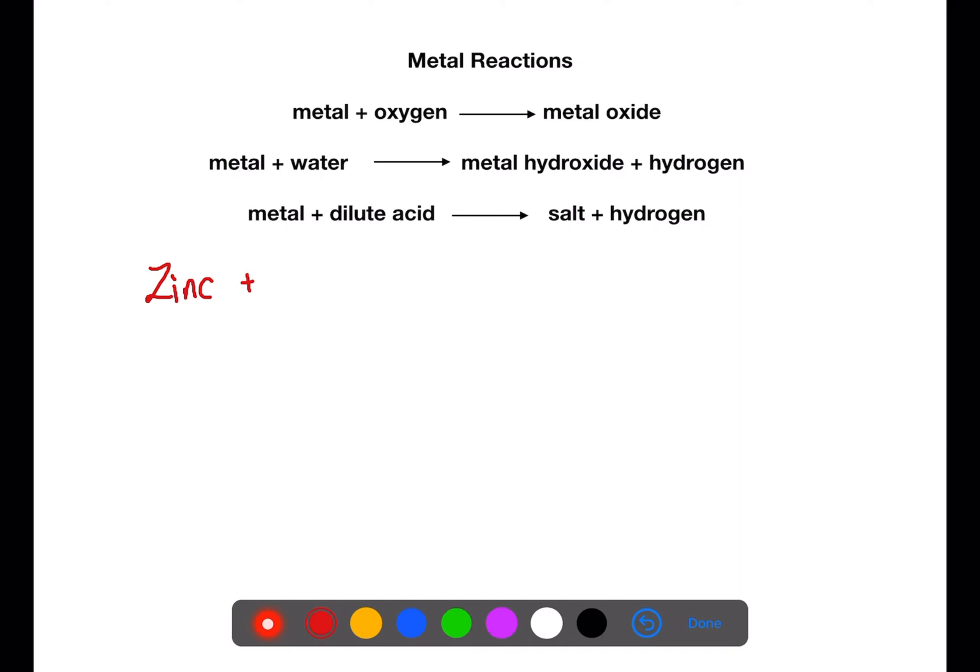Let's first look at writing word equations for these reactions. When metals react with oxygen they form metal oxides. For example, if zinc reacts with oxygen it will form zinc oxide.